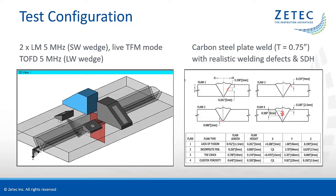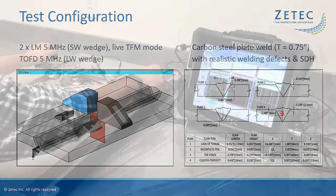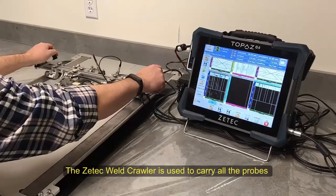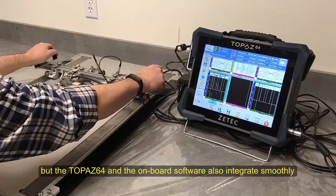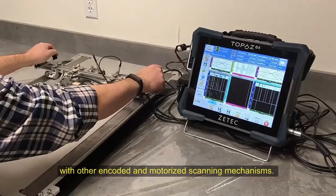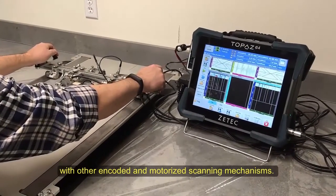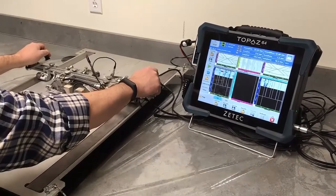The TOFD signals are generated by 5 MHz conventional UT probes on L wave wedges. The ZETEC weld crawler is used to carry all the probes for a one-line scanning sequence, but the Topaz 64 and the onboard software also integrate smoothly with other encoded and motorized scanning mechanisms.